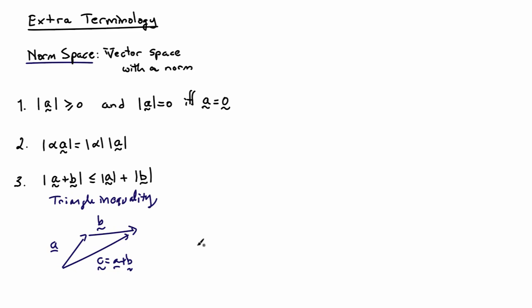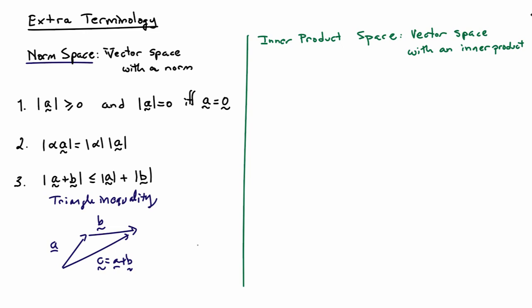There is one other formal definition that's nice to know: an inner product space, which is simply a vector space with an inner product — you can think of inner product as just a synonym for dot product. An inner product is an operation that takes two vectors in the vector space and assigns a number to them, and it must satisfy certain properties. The first is a distributive property: if I take two vectors a and b and dot them with a third vector c, I can simply take the individual dot products and add the numbers together.